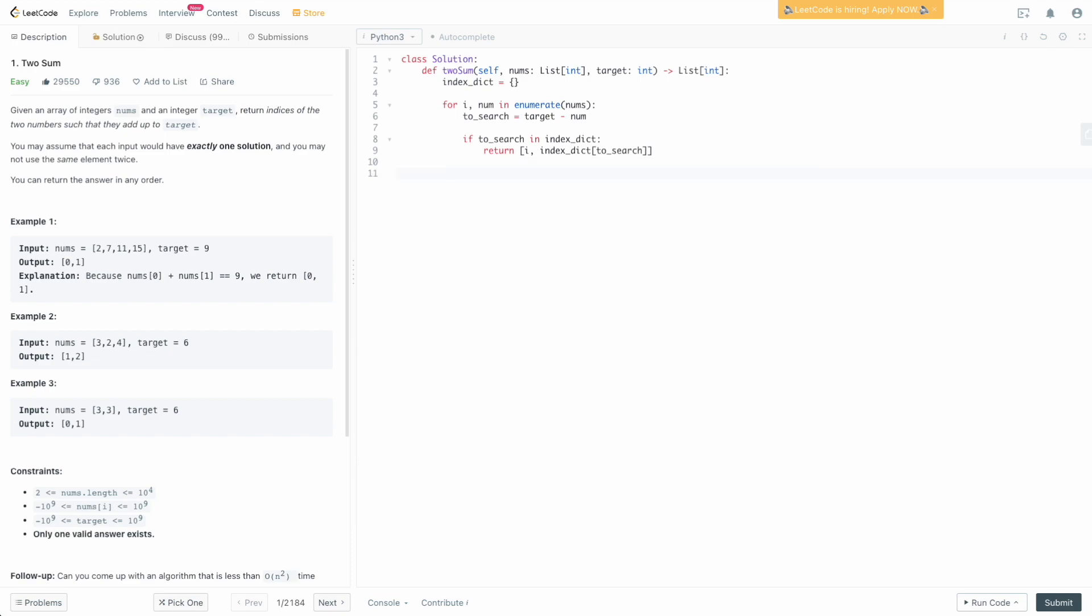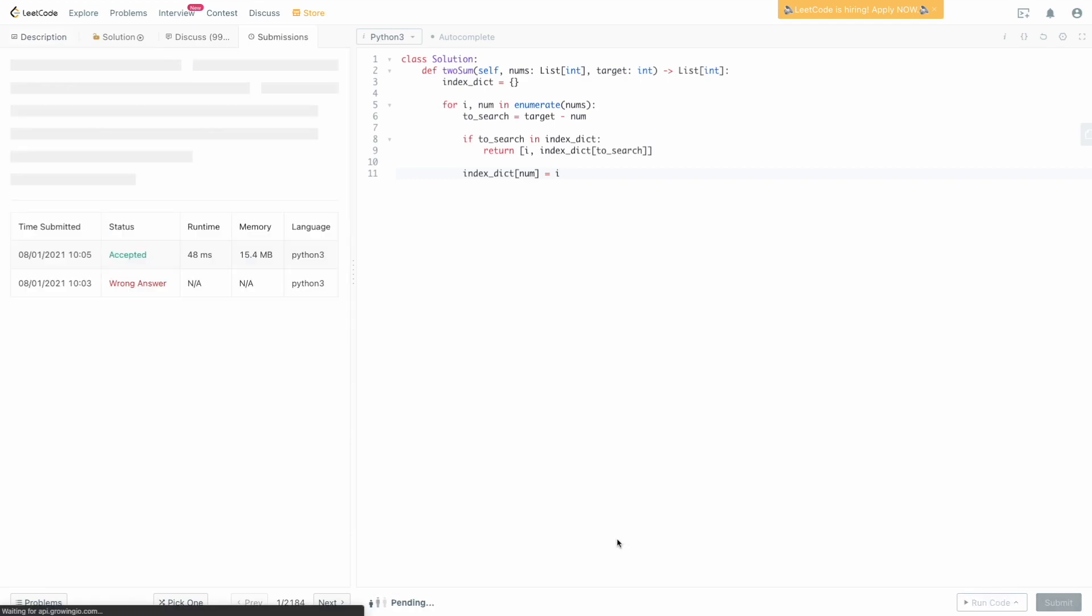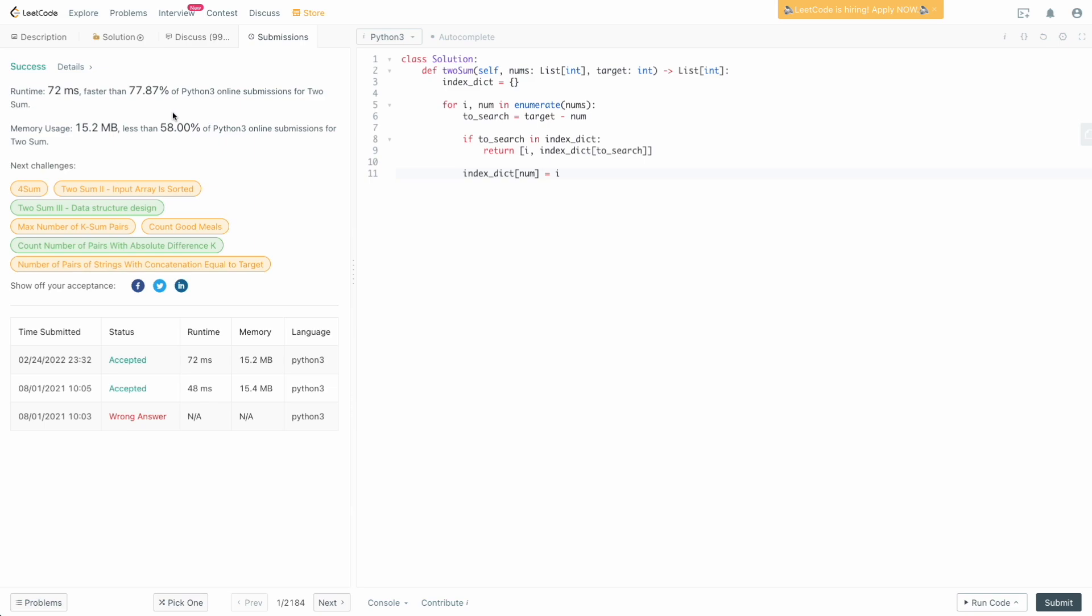And then we are guaranteed to basically find a solution to this problem. So we will find it within our for loop. Now, if we weren't able to find to_search, the last thing that we need to do is actually just update our index dictionary to show that we've seen our number before. So we're simply going to say index_dict of num is going to be we've seen it at the current index i. And that's really all we have to do. Let us submit this and double check that it works, which it does.